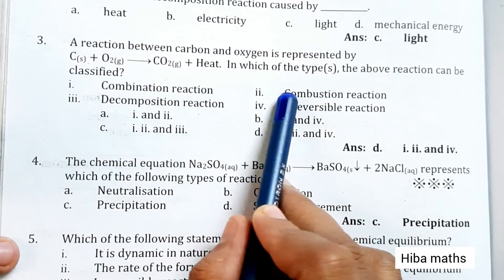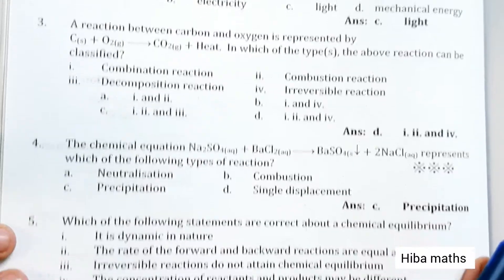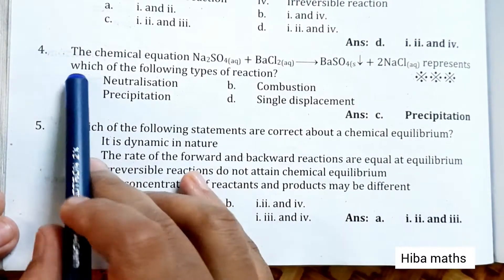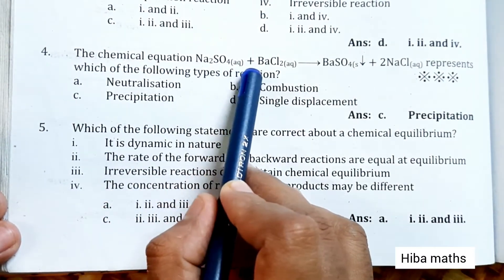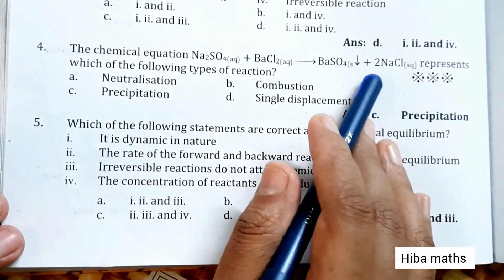Fourth question: Chemical equation Na2SO4 plus BaCl2 gives BaSO4 plus 2NaCl represents which of the following type of reaction?